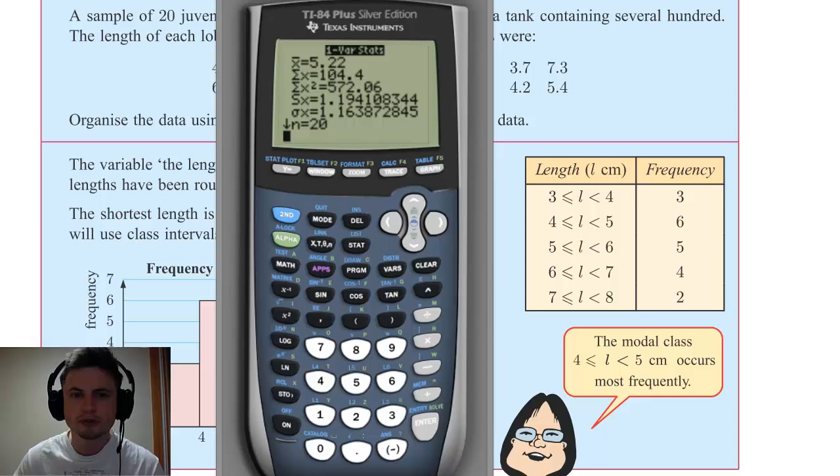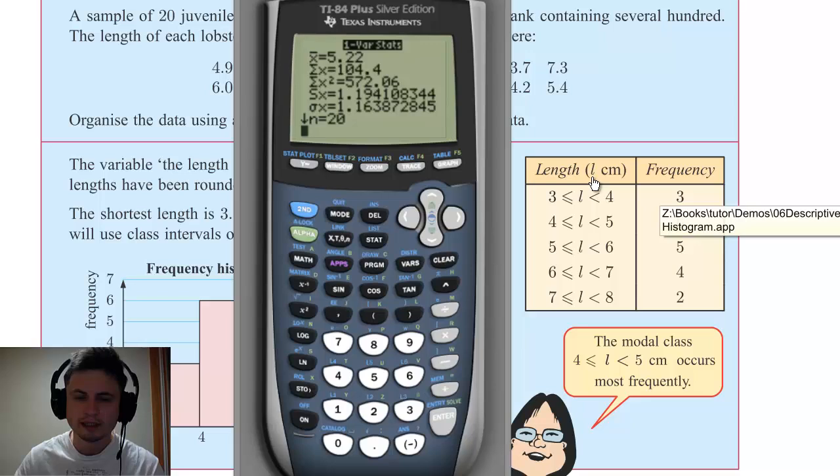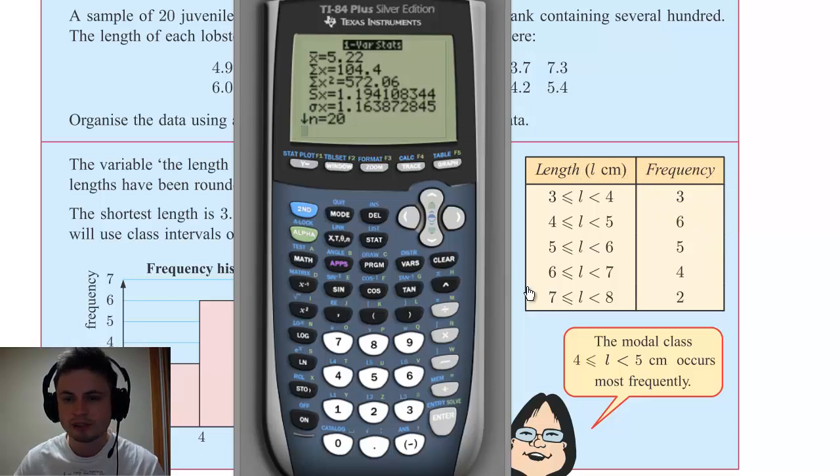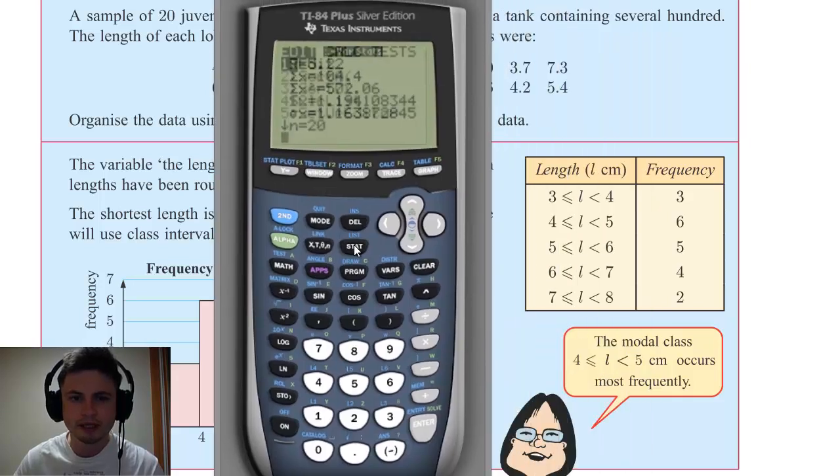But luckily we're going to have a frequency table example right here. So what I'm going to do is I'm not going to plot it using these values, I'm actually going to plot it using the frequency table. Let's just say that on the test you make a frequency table because this is part of your points, and then you want to plot it and check your work on the calculator just to see if you graphed it correctly.